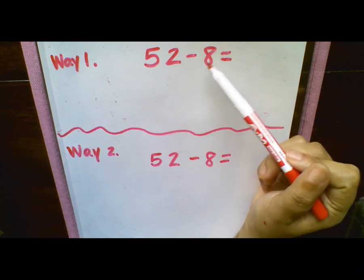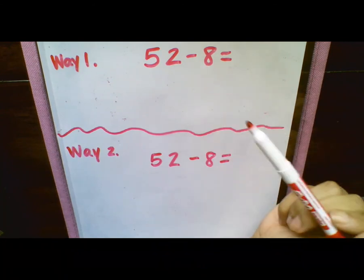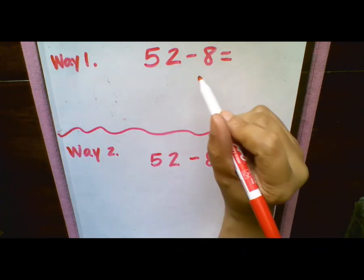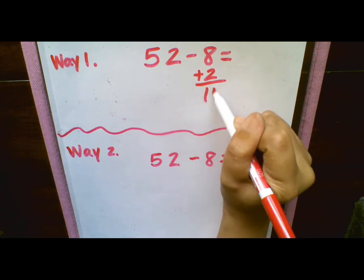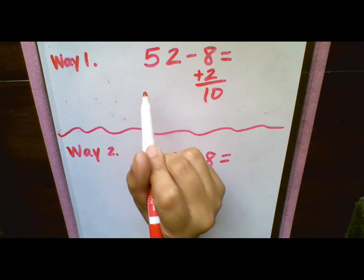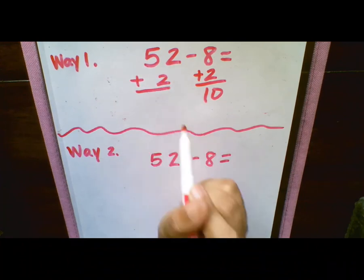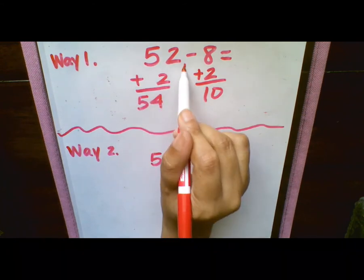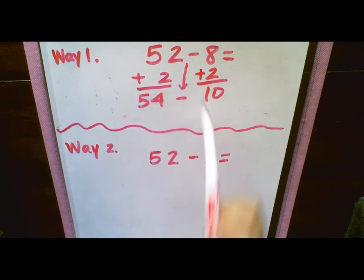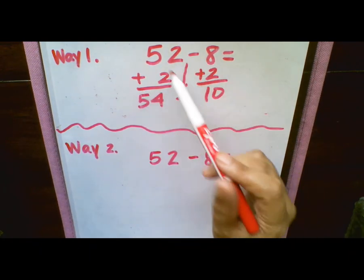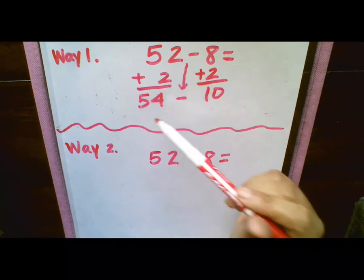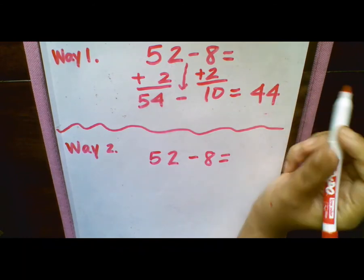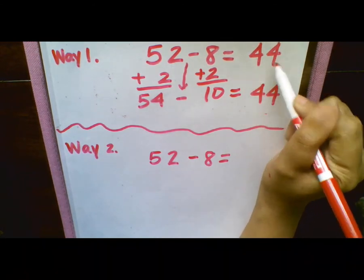So if I'm looking at 52 minus 8, again, we want to get our one digit number to a 10. It's going to make it easier for us to subtract. So if I try to get this number to a 10, I know that I need to add 2 to this number to give me a 10. Because I added 2 to this side, I need to do the exact same thing to this side. So 52 plus 2 is going to give me 54. I need to make sure I'm bringing that subtraction sign down, though. Because this is a subtraction problem. Even though we're adding 2 to each side, this still is a subtraction problem. So 54 minus 10 is going to give me 44. So our final answer is going to be 44.